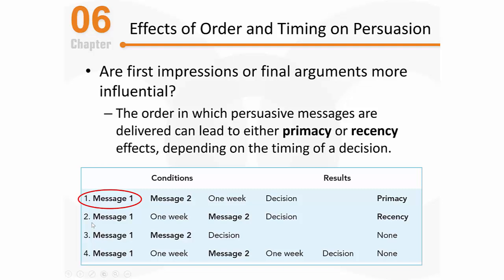In the second condition, the timing of the decision plays a key role. Subjects first heard the plaintiff's arguments, waited one week, then heard the defendant's arguments and made their decision immediately. In this situation, the defendants had the strongest case — the most recently heard information was most persuasive, which is why we call it a recency effect. The initial information from the plaintiff's case somewhat lost its persuasive impact during that one-week delay, and subjects were most persuaded by what they heard just before deciding.